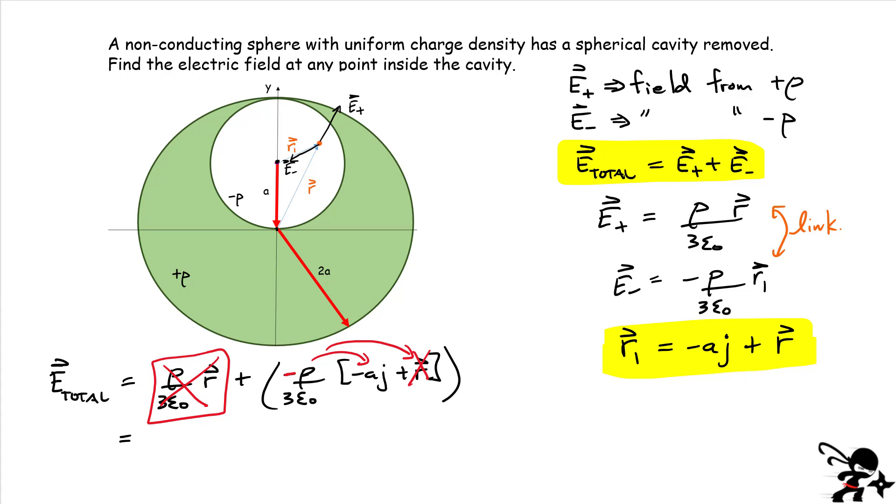And what you're left with, the remarkable result that you are left with is that this total field inside the cavity ends up being just multiplying this term here. See the negative signs cancel out. So you're left with rho. You're left with the radius of that small sphere divided by three epsilon zero and the direction of that field. Look what it is. It's in the j direction. So what does this all mean? Let me just highlight this. It's actually a remarkable result.